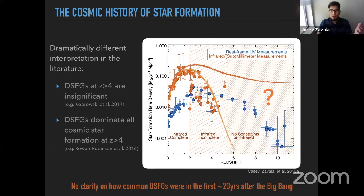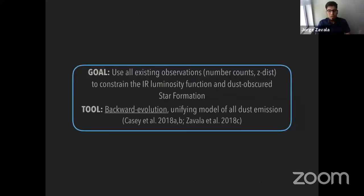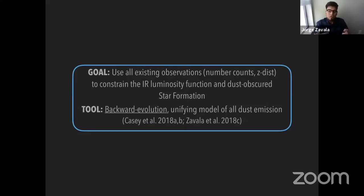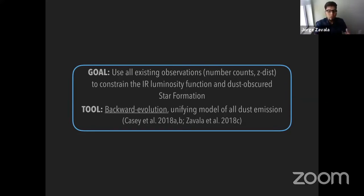The goal of this work is to use all observations at far-infrared, submillimeter, and millimeter wavelengths — particularly the number counts — to constrain the infrared luminosity function, and with that, constrain the dust-obscured star formation rate density. We use the number counts as a constraint and apply a backward evolution model to do so.